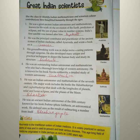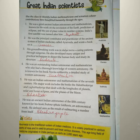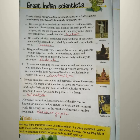He was an ancient Indian astronomer of the 5th century known for his book Brahma Sphuta Siddhanta, an astronomical work. He defined zero as the result of subtracting a number from itself. The name of this astronomer is Brahmagupta. He wrote the book Brahma Sphuta Siddhanta and gave the definition of zero: zero is the outcome when we subtract any number from itself — for example, eight minus eight gives you zero.